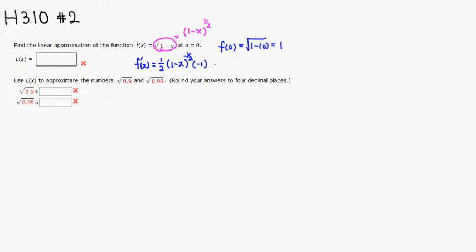So this is going to be negative 1 over 2 square root of 1 minus x. So let's find f prime of a, in this case a is 0, so it's negative 1 over 2 times square root of 1, so it's just going to be negative 1 half.